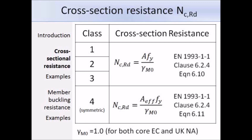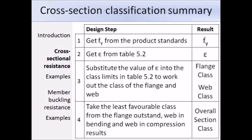The design steps required to classify a section are covered in detail in the cross-section classification e-lecture. Briefly: first, determine F_Y using the product standard as directed by the UK National Annex; then get epsilon from the bottom of Table 5.2; using the limits in Table 5.2, work out the class of the web and flange; the overall class is the least favourable between the web and flange.